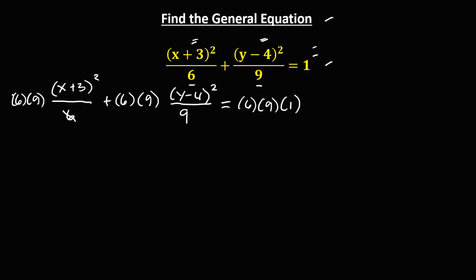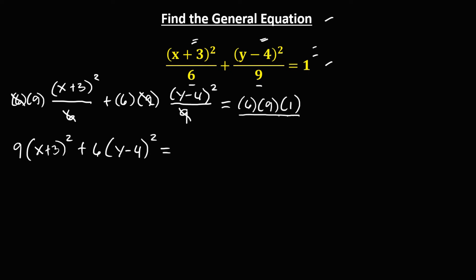To simplify, we can cancel this 6, so we have 9 times (x plus 3) to the power 2, plus — cancel this 9 — so we have 6 times (y minus 4) to the power 2, then equals 6 times 9 times 1, that's 54.